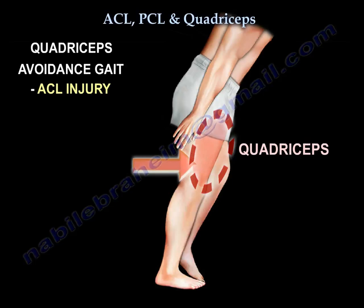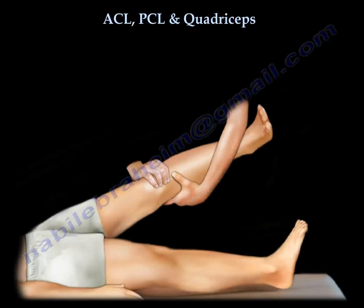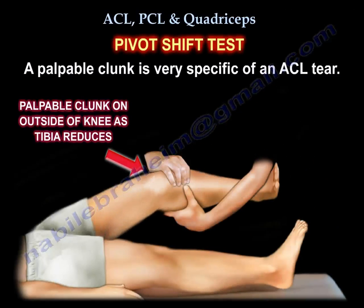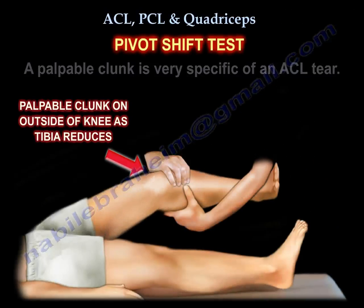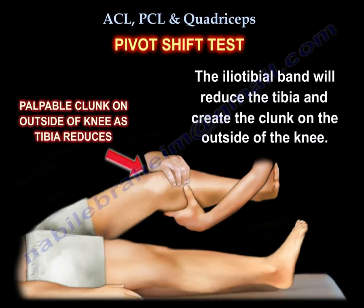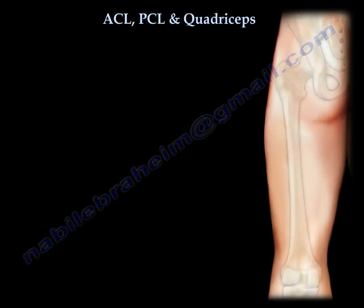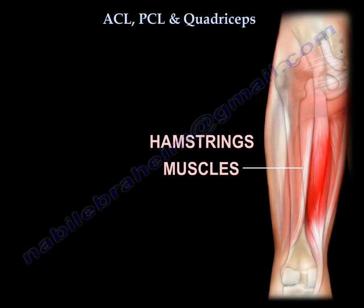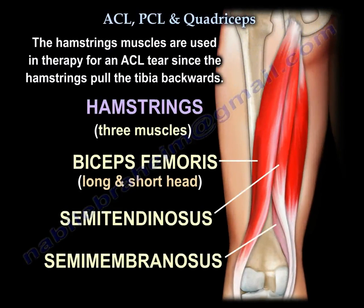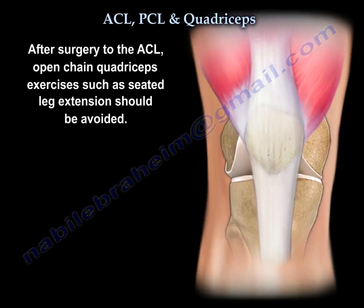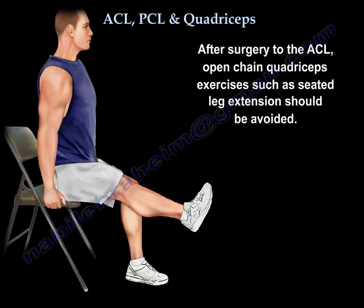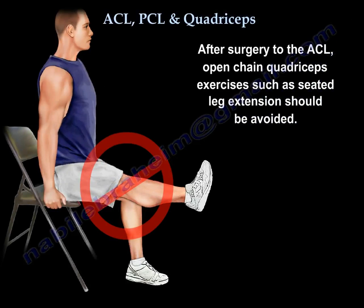When you flex the knee, the IT band becomes a flexor of the knee and it reduces the tibia — the IT band pulls the tibia backwards, and this is the theory behind pivot shift. So we use the hamstring for therapy for the ACL tear because it can pull the tibia backwards. If the front structure is injured, the ACL gets rehab using the most posterior structure — the hamstring. Also after surgery, you should avoid open chain quadriceps strengthening such as seated leg extensions.